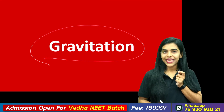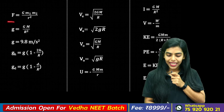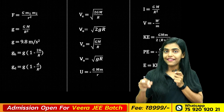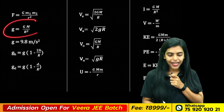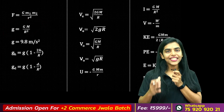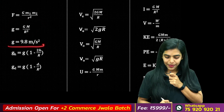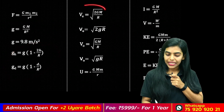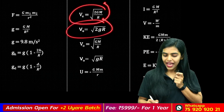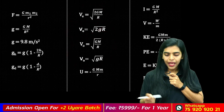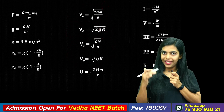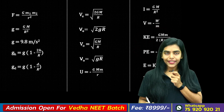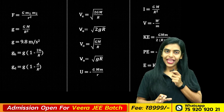Next is the Gravitation chapter. The gravitational force is G times m1 m2 divided by r squared, where G equals 6.67 times 10 to the minus 11. The acceleration due to gravity g equals GM by r squared, with a value of 9.8 m/s². Other important equations include: variation of g with height and depth, escape velocity, orbital velocity, gravitational potential energy, gravitational potential, and total energy of a satellite.